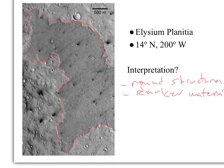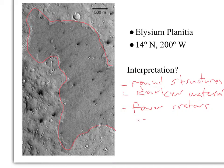Do the densities of these round structures differ between the dark area and the light area? In the dark area, there appear to be fewer craters.